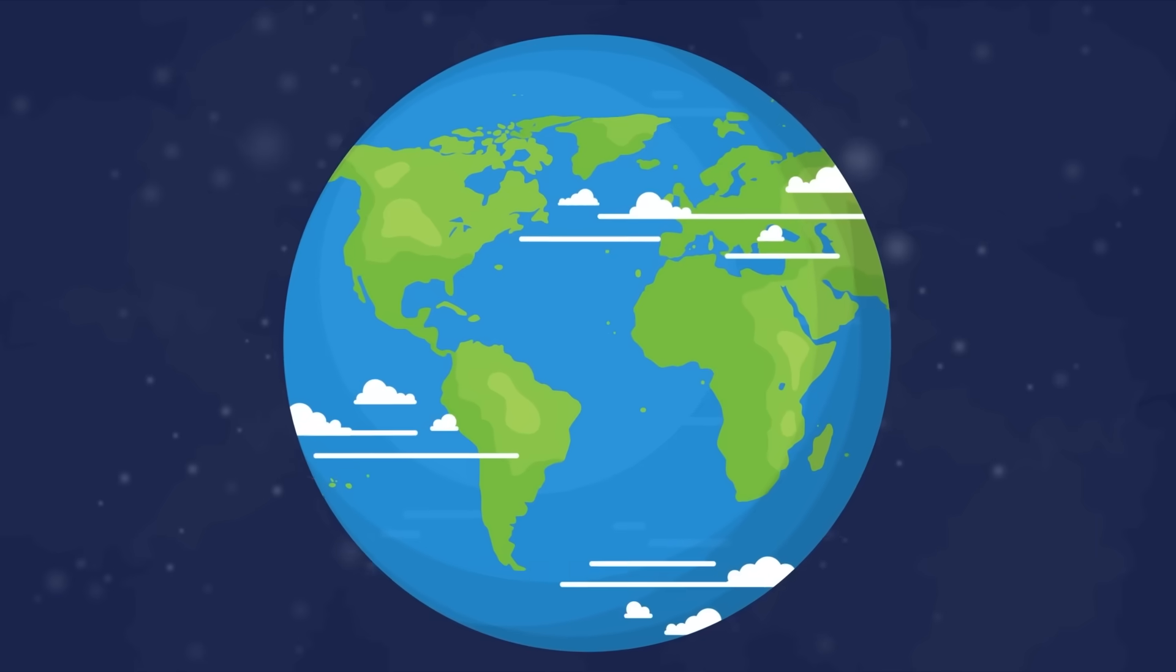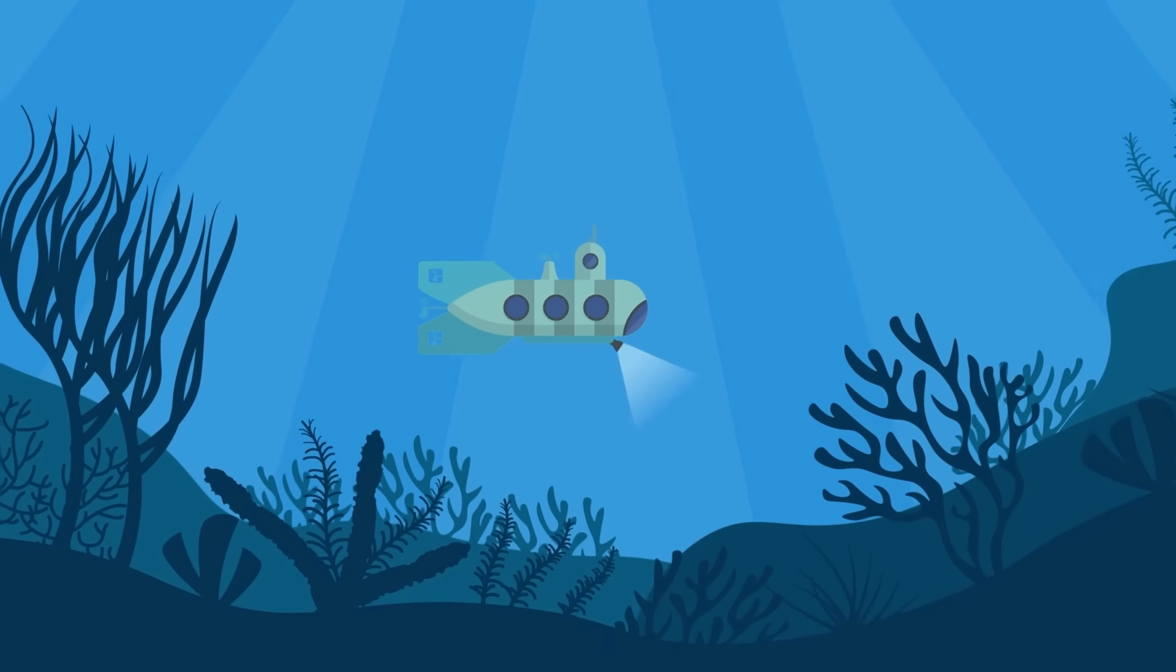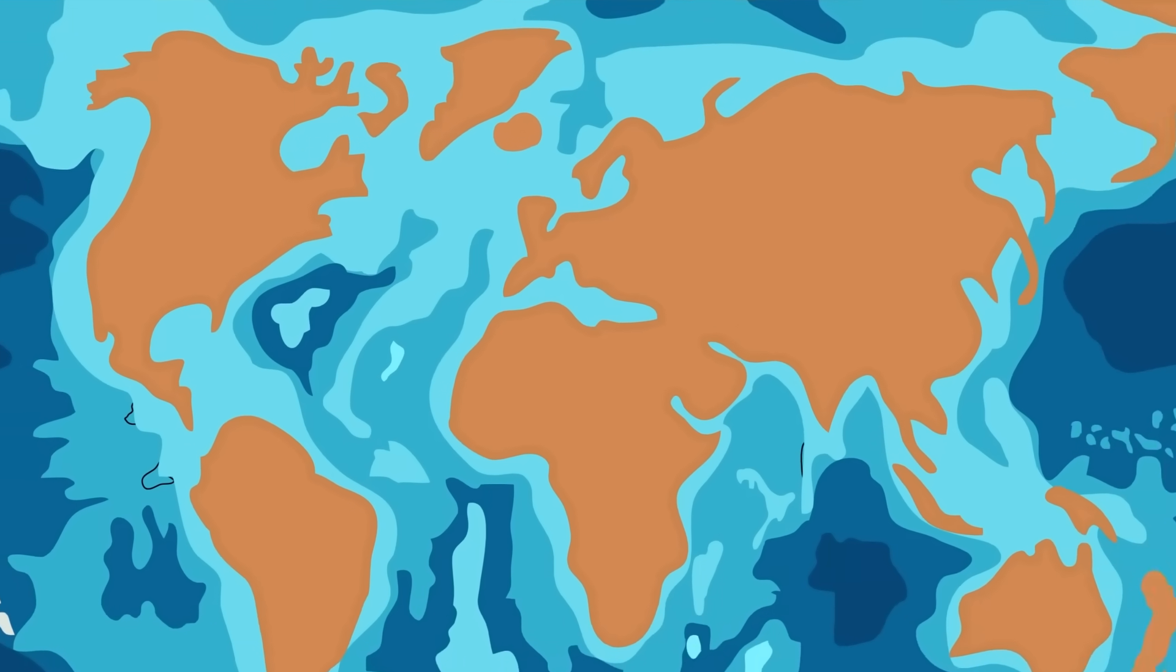Earth's surface is heavily covered with water, but it is a bit deceiving. The oceans are deep to us, because we're rather small. They only make up a small percentage of Earth's mass.